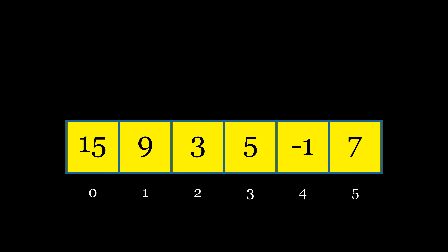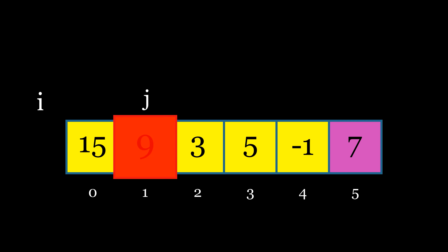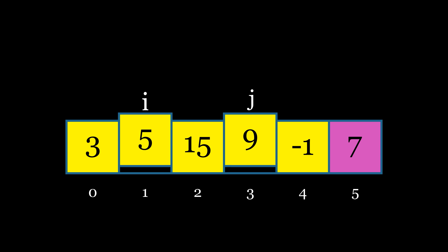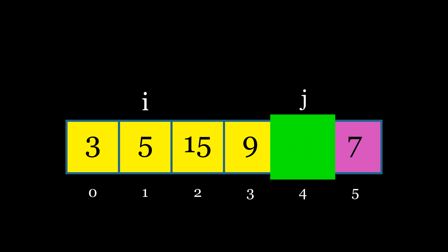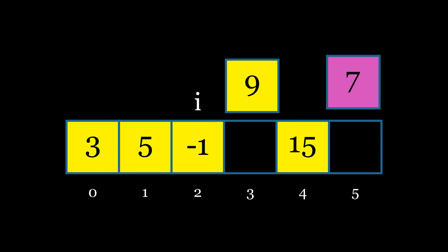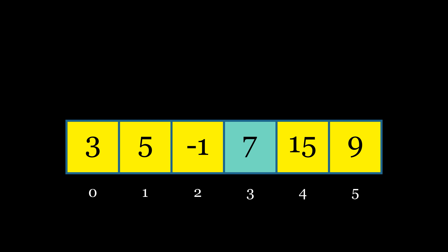Now let's see the visuals in action. First, we choose the pivot element, which in our case is the last element of the array. Next, we initialize two variables: j, which starts at the first element, and i, which is initially set just before j. As we iterate through the array, we compare whether the element at index j is less than or equal to the pivot. If it is, we increment i by 1 and swap the elements at index i and index j. This process continues until j reaches the end of the array. Finally, we swap the pivot element with the element at the i plus 1 position, placing the pivot in its correct sorted position. This creates a partition — all elements smaller than the pivot are moved to its left, while larger elements are on the right.